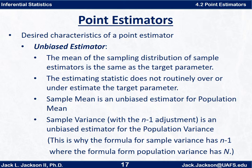When you're looking at an unbiased estimator, what you're saying is the mean of the sampling distribution of sample estimators is the same as the target parameter. The estimating statistic does not routinely over- or underestimate the target parameter. A good example is the sample mean x-bar, which is an unbiased estimator for the population mean. As we've seen with sampling distributions, the mean of the sample means equals the mean of the population, so the sample mean does not inherently underestimate or overestimate the population mean.